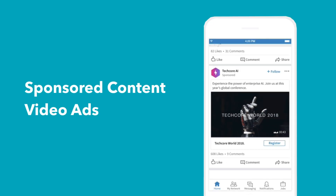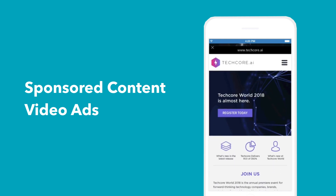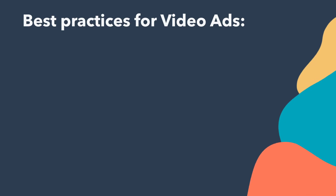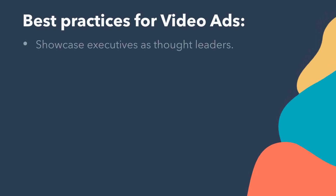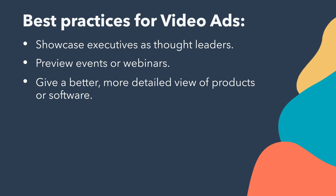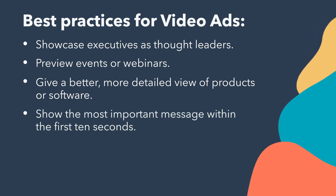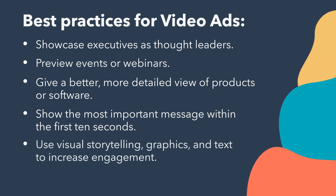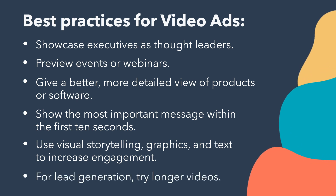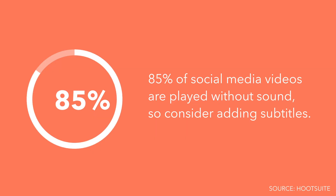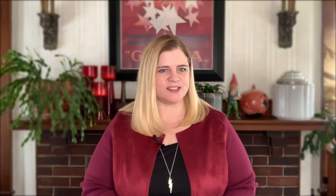Video ads can drive leads, build brand awareness, or promote a new product, and they offer video metrics and data on the types of professionals interacting with your ad. Best practices include showcasing executives as thought leaders, previewing events or webinars, and giving a detailed view of products or software. Show the most important message within the first 10 seconds, use visual storytelling, graphics, and text to increase engagement, and try longer videos for lead generation. 85% of social media videos are played without sound, so consider adding subtitles. For brand awareness goals, keep videos under 30 seconds — a LinkedIn study found that shorter videos have 200% better view completion rates.